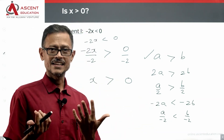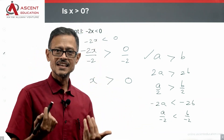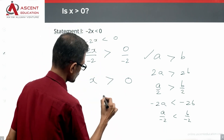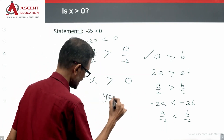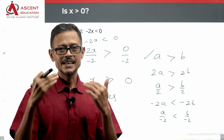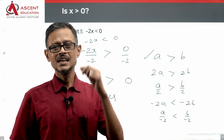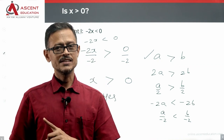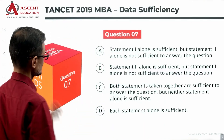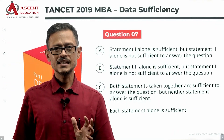So the question is: is x greater than zero? From statement one we know that x is greater than zero — that is a definite, conclusive answer. The answer is yes. If minus 2x is less than zero, then x will be greater than zero. Statement one is sufficient to answer the question.